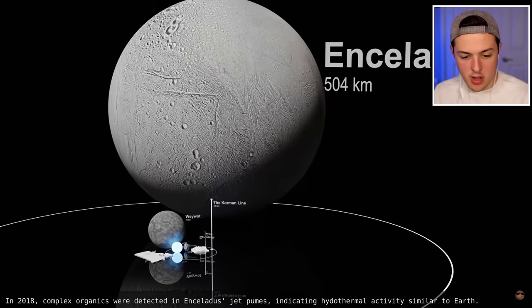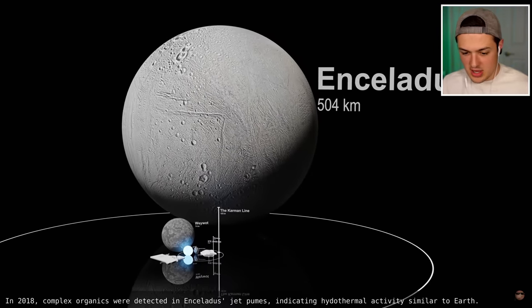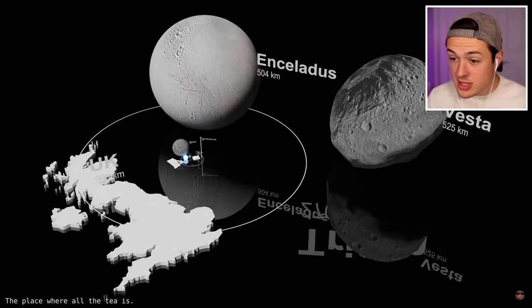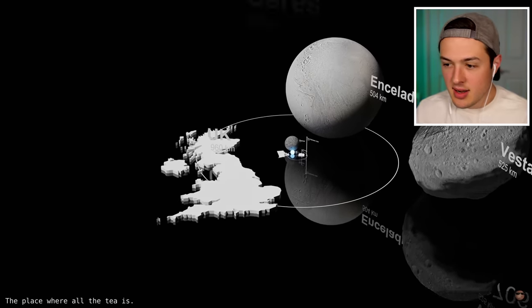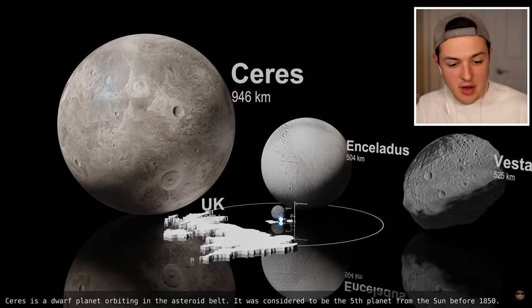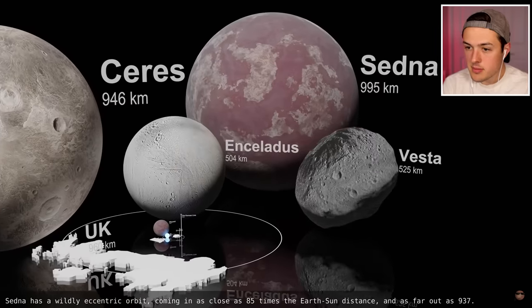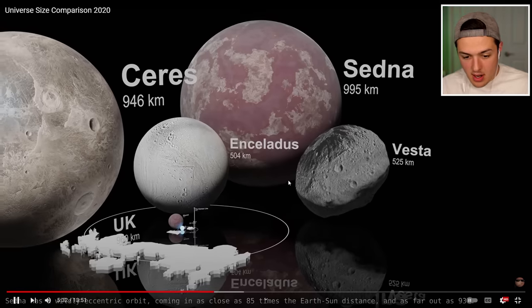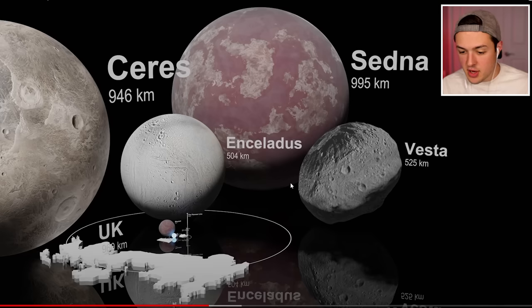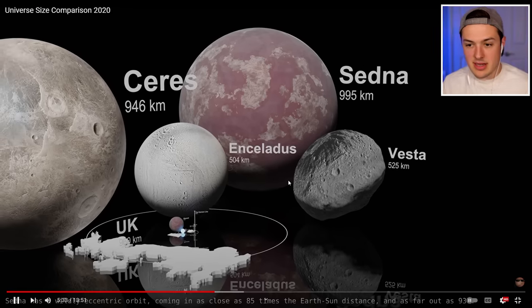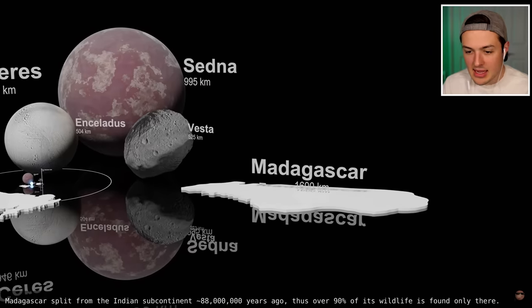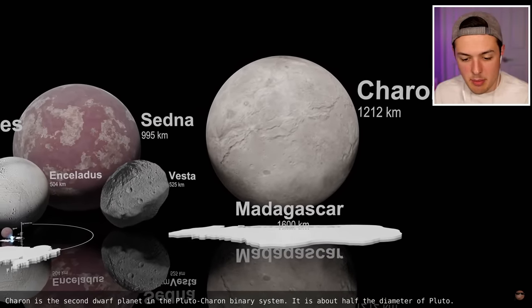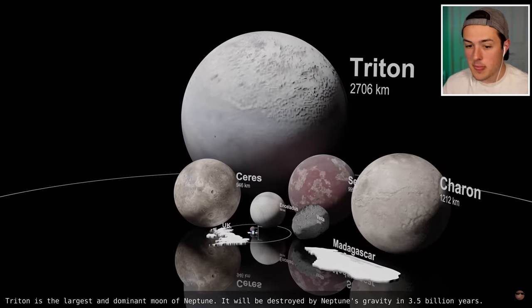Triton, the only known moon of Neptune. This is... What is this? Complex Organics? That's a moon. I think this is an asteroid. The largest asteroid in the solar system. If that thing crashed into Earth, we'd all be dead. It's almost as big as the entirety of the UK. Ceres is a dwarf planet orbiting the asteroid belt. Sedna has a wildly eccentric orbit coming close... Wait, wait, wait. Hold on, wait. Go back to that. It's coming in close as 85 times the Earth-Sun distance. Wow. That means it's gotten pretty close to us.